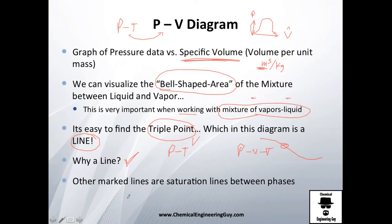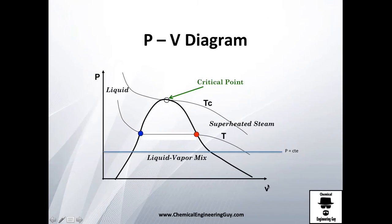And what else? The other marked lines are saturation lines between phases. So essentially, you have the y-axis which is pressure, you have the specific volume here in the x-axis. This dotted line is the equilibrium between liquid and vapor. Actually here you have a liquid-vapor mixture which of course you weren't able to see before.